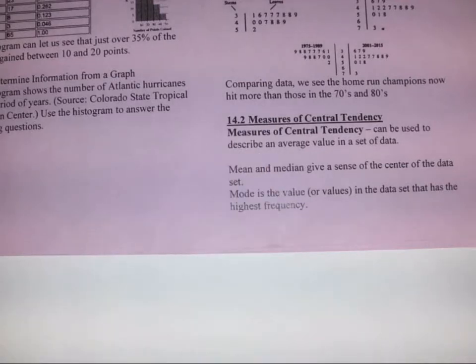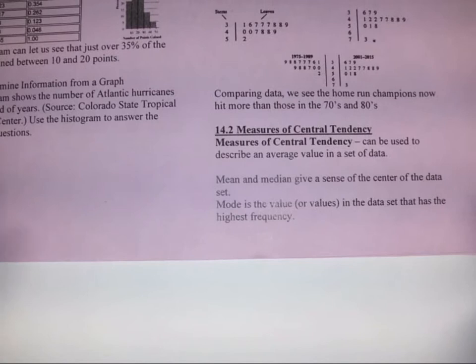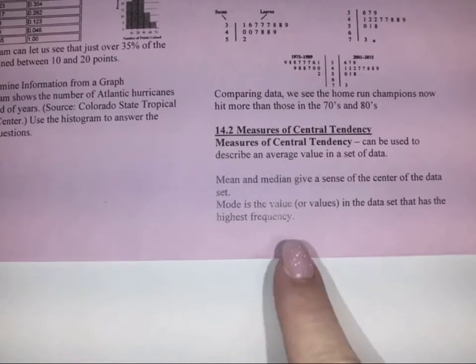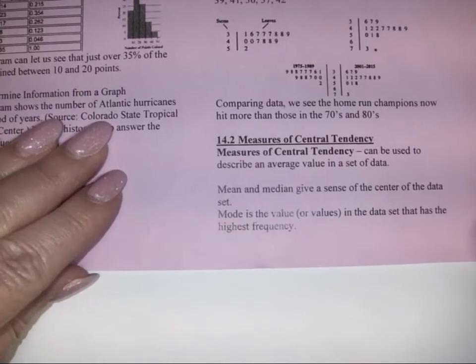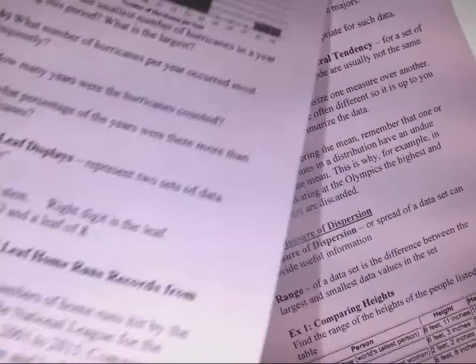We're talking about measures of central tendency, and they can be used to describe an average value in a set of data. The mean and median give us a sense of the center of the data set, and the mode is the value or values in the data set that have the highest frequency.